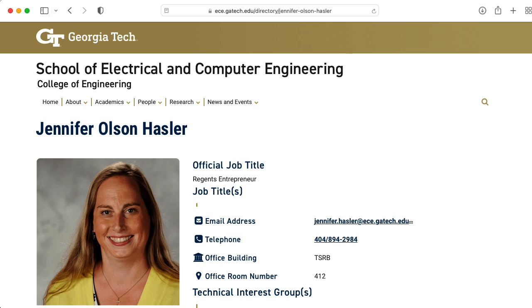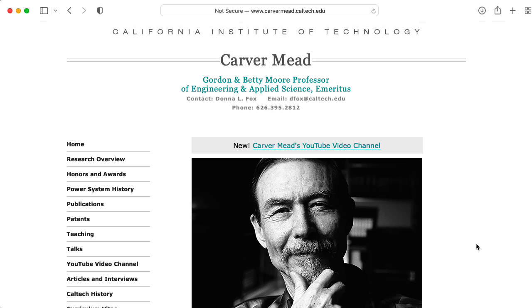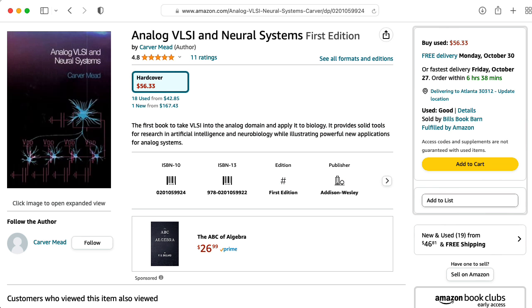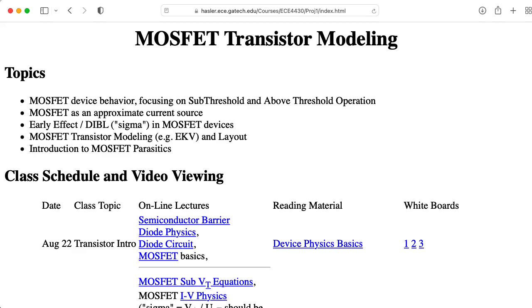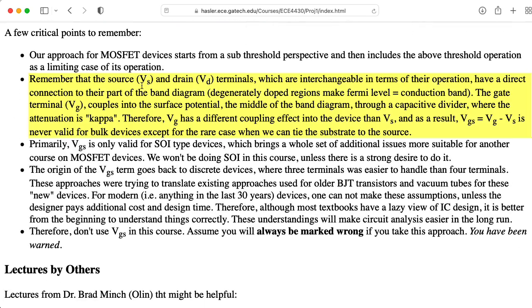I was introduced to this concept by my colleague Jennifer Hassler. Jennifer was a PhD student of Carver Mead, who takes this approach in his book, Analog VLSI and Neural Systems. This semester, Professor Hassler is teaching a class on Analog Integrated Circuit Design. Let's go to her website, click on Topic Outline, and click on the first project. If we scroll down a little bit, there are some interesting notes. Remember that the source and drain terminals, which are interchangeable in terms of their operation, have a direct connection to their part of the band diagram. The gate terminal couples to the surface potential, the middle of the band diagram, through a capacitive divider where the attenuation is kappa. Therefore, VG has a different coupling effect in the device than VS, and as a result, VGS equals VG minus VS is never valid for bulk devices, except for the rare case when we tie the substrate to the source. The origin of the VGS term goes back to discrete devices, where three terminals was easier to handle than four terminals.